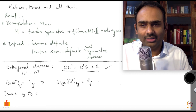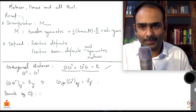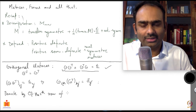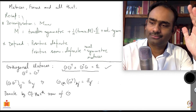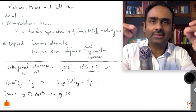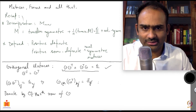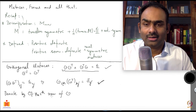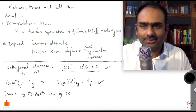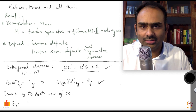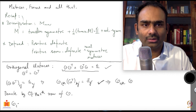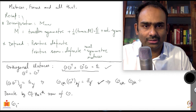I am denoting by O_i the i-th row of the matrix O. You have an n cross n matrix and it has several rows; look at the i-th row and that is what I am denoting by O_i. Let us see what this relation is saying about these row vectors. This becomes O_ik times O_jk equals delta_ij.